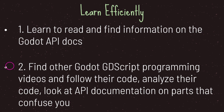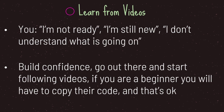To do that: first, find a Godot GDScript programming video or article, then follow and analyze their code. What you don't know, you look up in the API documentation on the parts that confuse you — and then you understand what's going on. Now you may be thinking you're not really ready to start this, or that you don't understand what's going on when copying code. And you know what? That's OK. You want to build confidence, so go out there and start watching videos and copying the code.